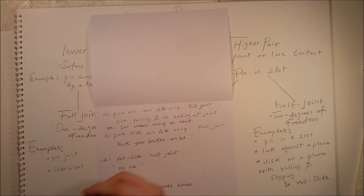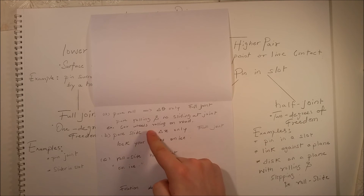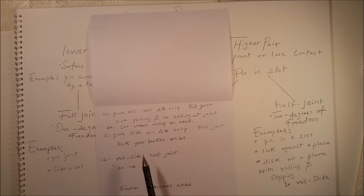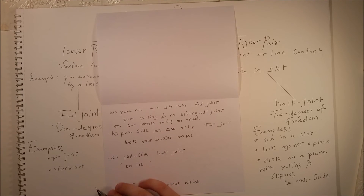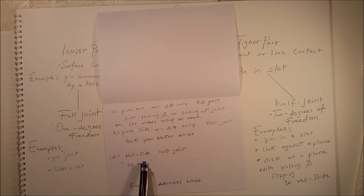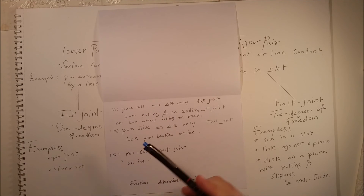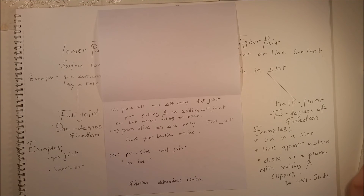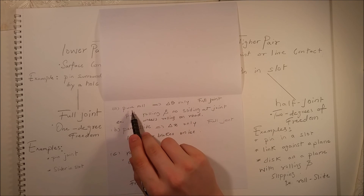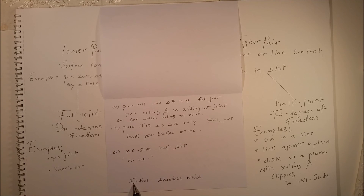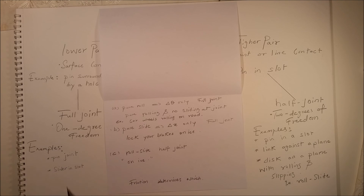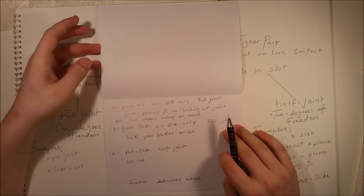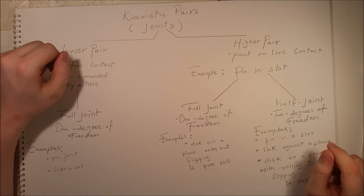Pure slide involves only movement along the x-axis and is also classified as a full joint. An example is when you lock your brakes on ice — the wheels stop rolling and start sliding, which is pure slide. Roll-slide is classified as a half joint; when you accelerate on ice, you get both slipping and rolling simultaneously. The primary factor that determines which category the movement falls into is friction. That concludes our lesson — thank you for attending.